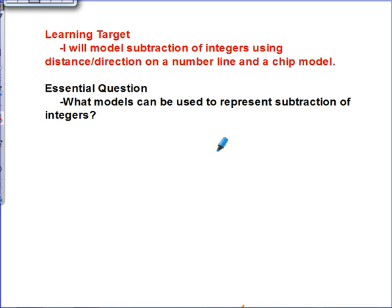Hello students. Today we're going to model subtraction of integers using a distance or direction model on a number line and also a chip model. Both of these models were used while adding integers, so today we're going to explore how we can use them to subtract integers. Take a second to write down this learning target and essential question in your C-notes and then we'll continue.